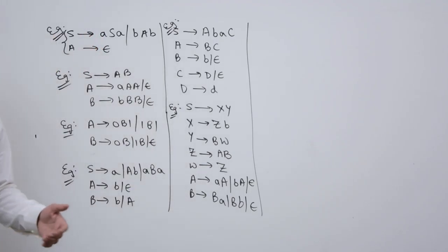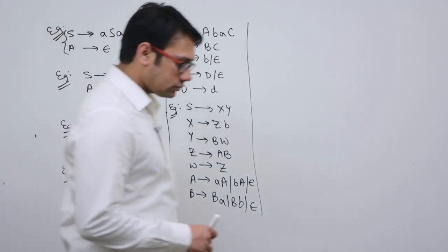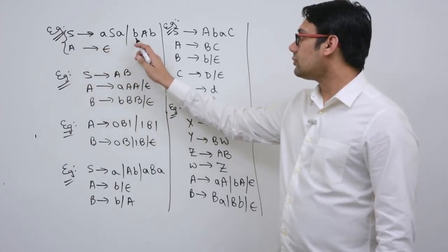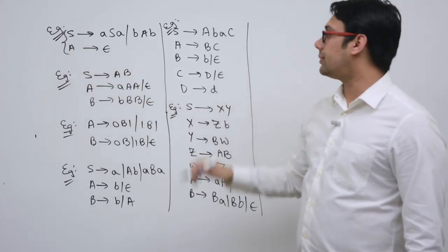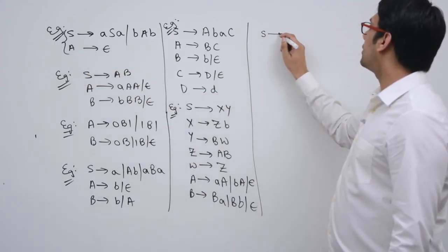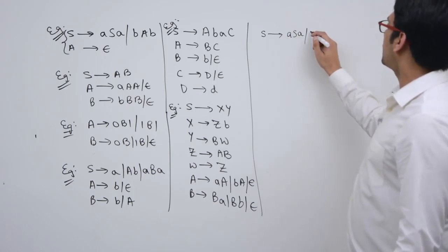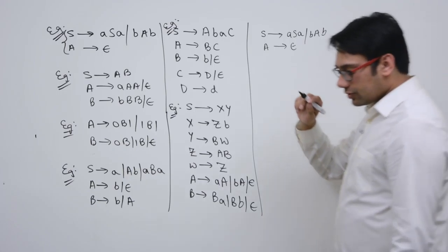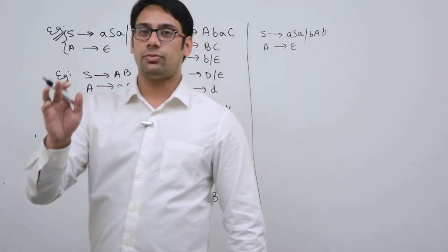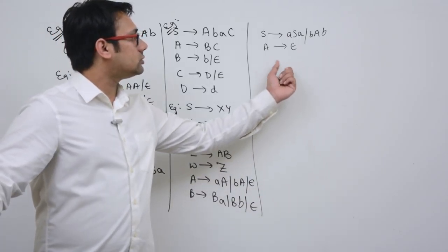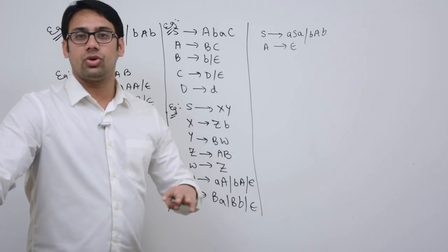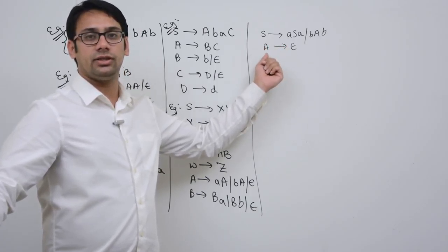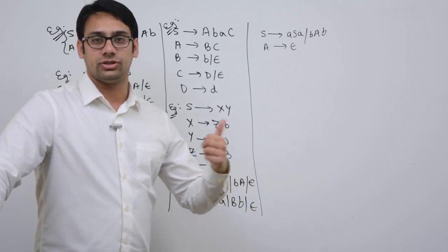Let us try to remove epsilon productions from these grammars. The first grammar is: S derives a S a | b a b, and A derives epsilon. We want to remove all epsilon productions without changing the meaning of the grammar. The epsilon production here is A derives epsilon.